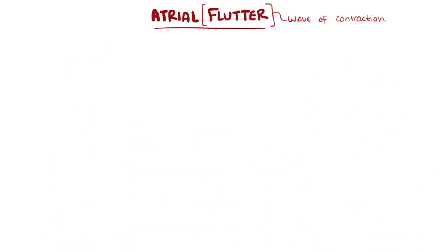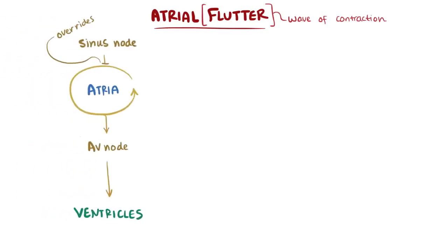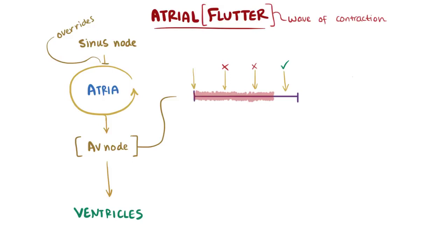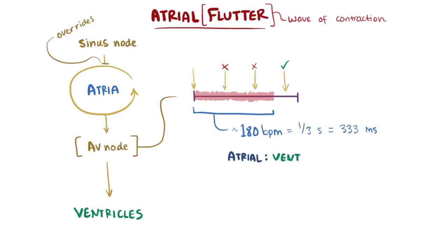In order for the ventricles to contract, that signal needs to move down through the AV node. Luckily the AV node has a relatively long refractory period, meaning it can't conduct every single impulse being sent from the atria, and typically maxes out around 180 beats per minute, meaning it has to wait a minimum of about one third of a second, or 333 milliseconds, until it can relay another signal. So if the atrial rate is higher than 180 beats per minute, you'll end up only getting a ratio of atrial beats to ventricular beats, like 2 to 1 or 3 to 1.